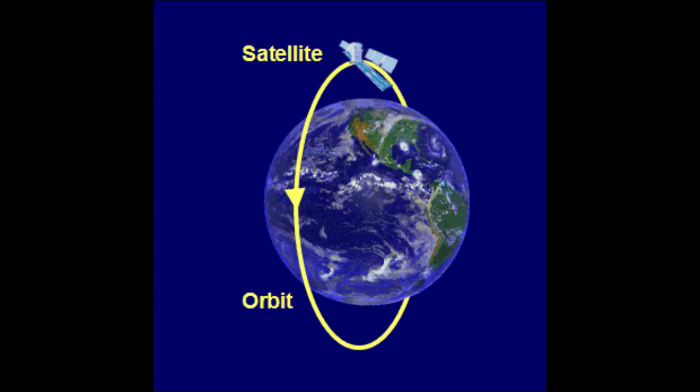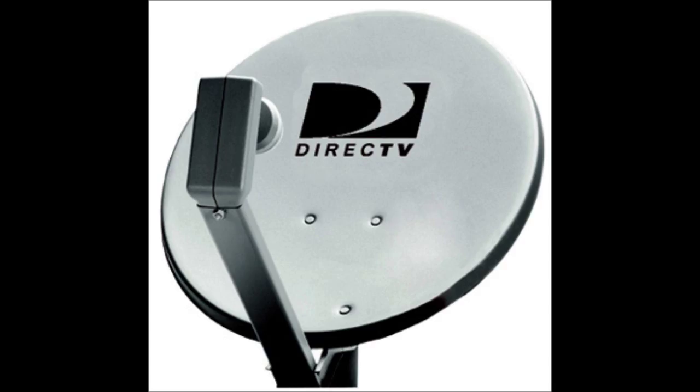The satellite is orbiting the Earth and maintains its place by moving at the same speed as Earth's rotation, so that you don't have to move your satellite dish every 10 seconds to get a channel.